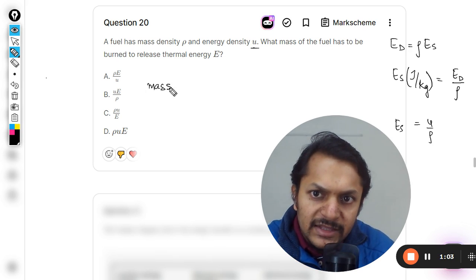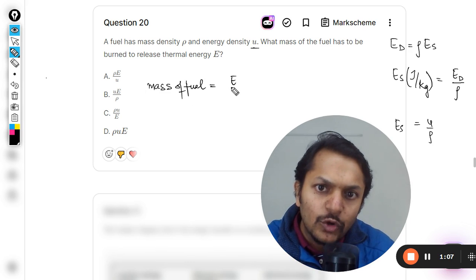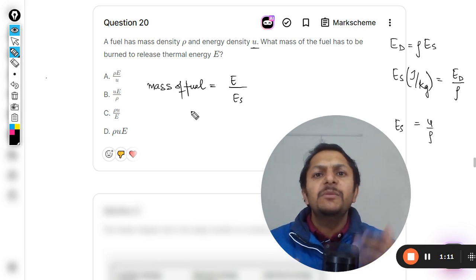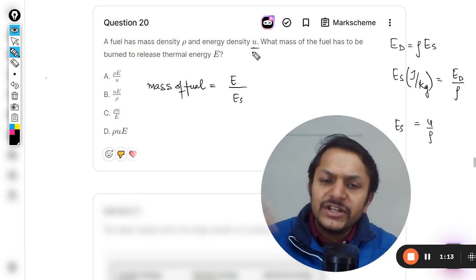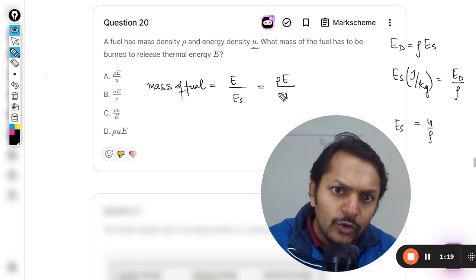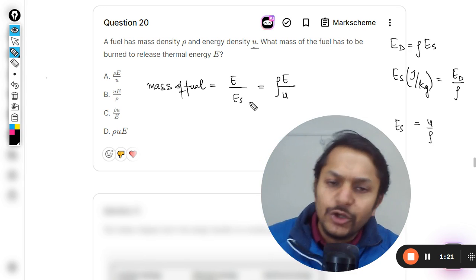And so E divided by u divided by ρ. So ρ will be multiplied in the numerator.